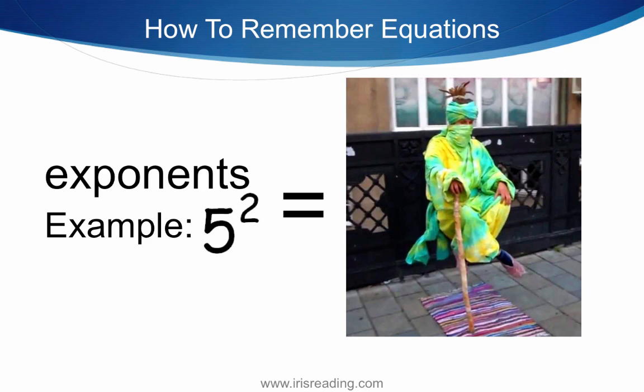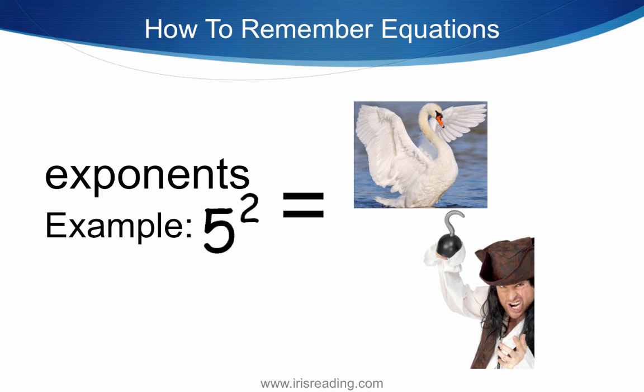So let's say we had 5 squared. Five represents a hook, so I'd picture something pirate-related, and the two as an exponent is a swan. I'd picture a swan flying around in the air, and the pirate is maybe trying to hit it down, or the swan is attacking the pirate. You'd picture this weird scene, and that would actually help you remember that aspect of the equation.